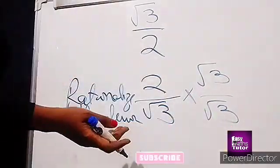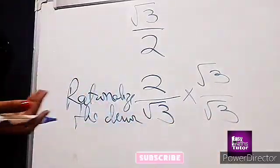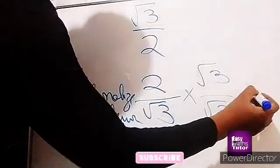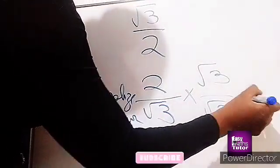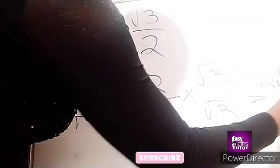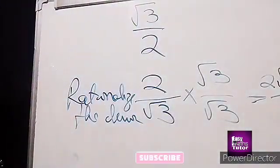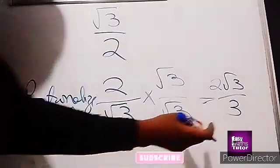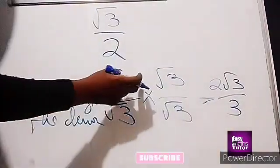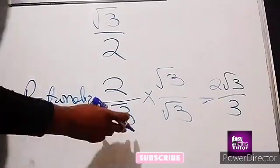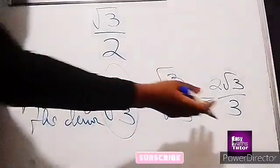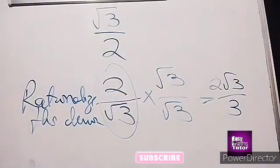In the case of such surds, it will help us to simplify the surd better. So if we rationalize this, we're going to have root 3 times root 3. We're going to have 2 root 3 over 3, because root 3 times root 3 will give us 3. And 2 times root 3 will give us 2 root 3. So if we rationalize the denominator of a surd that looks like this, this will be our final result.